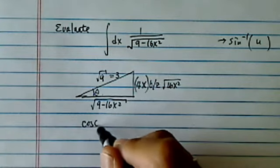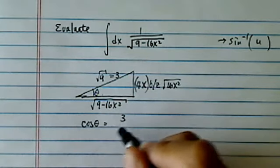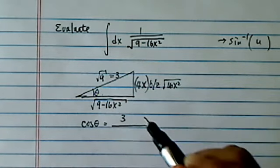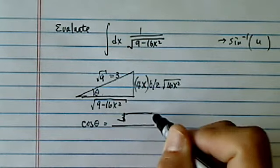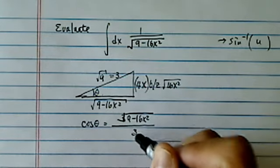So, obviously, cosine theta is equal to 3 divided by—the other way around—9 minus 16x squared divided by 3.